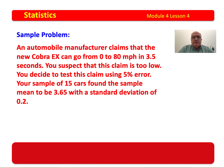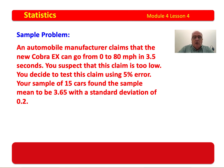An automobile manufacturer claims that the new Cobra EX can go from 0 to 80 miles per hour in 3.5 seconds. You suspect that this claim is too low. You decide to test this claim using 5% error. Your sample of 15 cars found the sample mean to be 3.65 with a standard deviation of 0.2. You may have only been able to sample 15 cars because of cost or time — there are many things that could cause you to use a small sample.